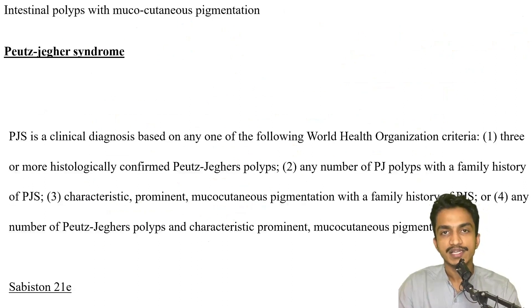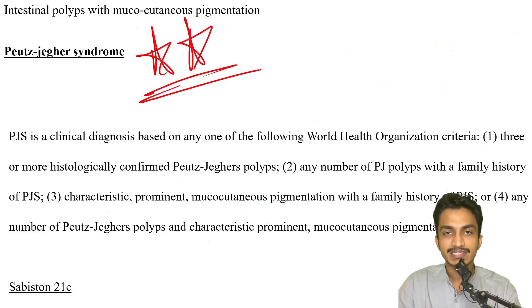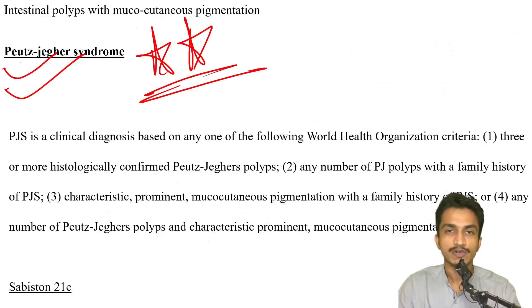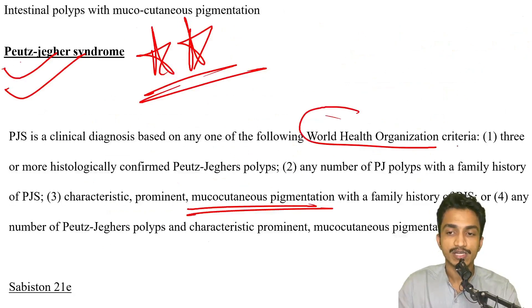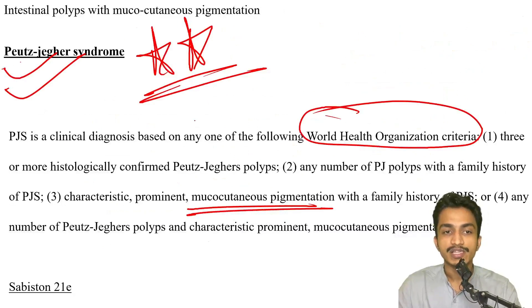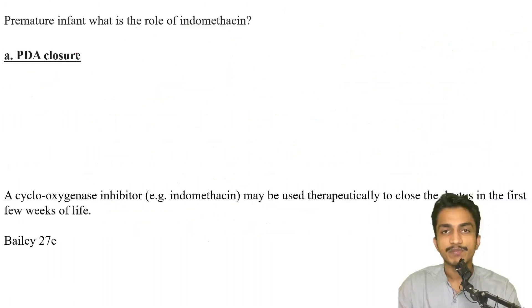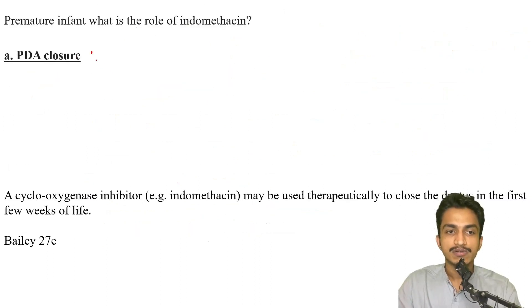Patient with intestinal polyps and mucocutaneous pigmentation — very straightforward, already discussed in must-know GIT topics. That is Peutz-Jeghers syndrome: three or more histologically confirmed polyps with family history or with characteristic mucocutaneous pigmentation, according to WHO criteria. Answer: Peutz-Jeghers syndrome.